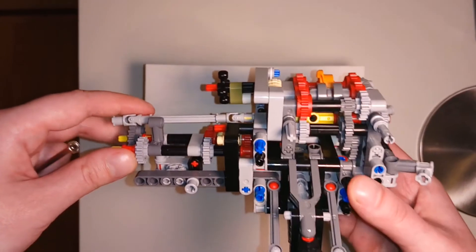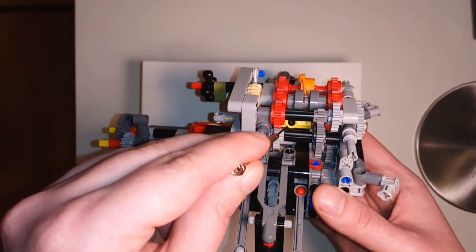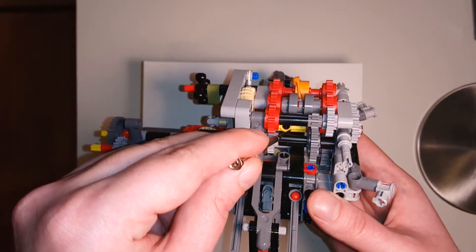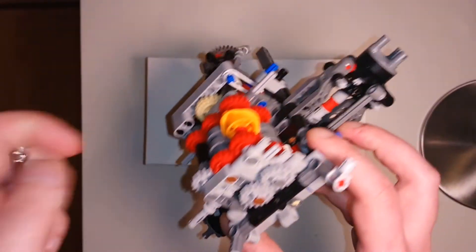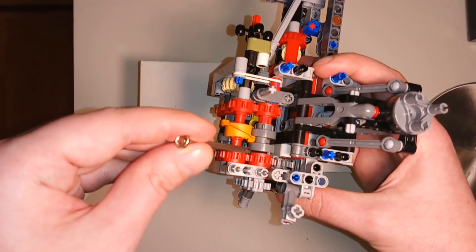This time, the input travels via this yellow shaft in the center of the gearbox, to these two gears in the back, and then to the selected red gear.